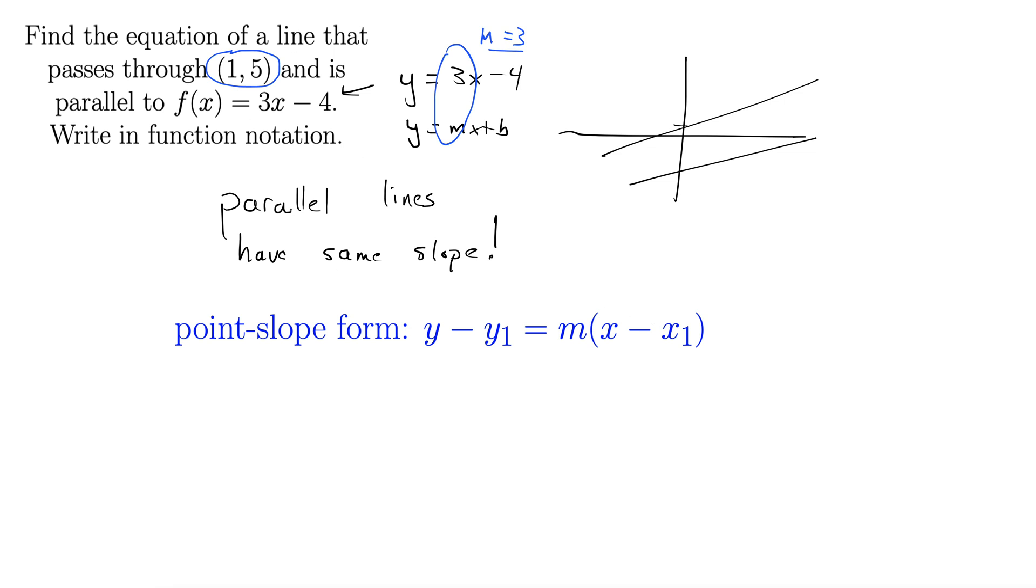So let's fill this part in. We have y - y₁, which we'll say is 5, equals m. We decided that was 3. x - x₁, which is 1. I'm using here x₁ comes from there and y₁ comes from the 5.